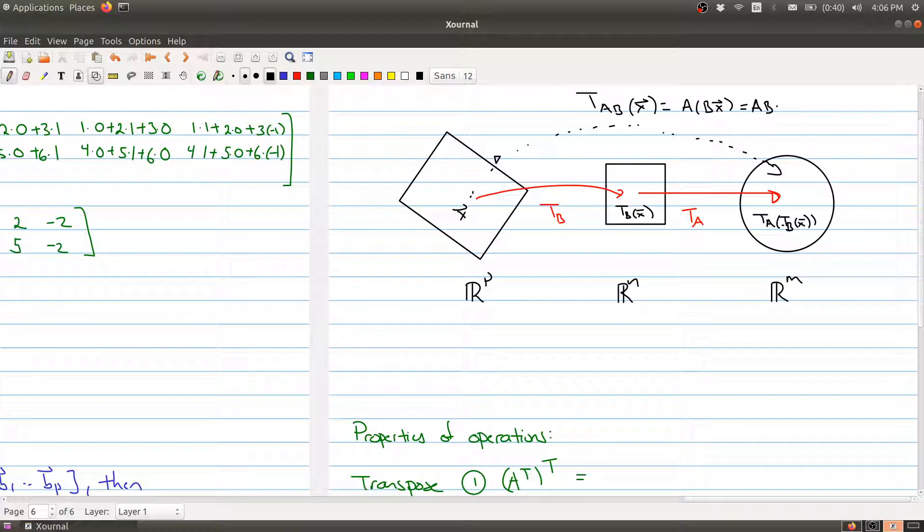So that's ABX. So we're composing the two functions. So you can go into this function first and then into this function. So that's kind of what's happening from the point of view of linear transformations.